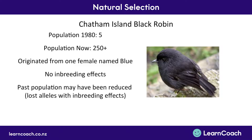There are several theories about why this could be. One is that there are large genetic drift effects, as we learned about in the last video with small populations. But also one could argue that Blue, as the last surviving female robin on Chatham Island, must have great genes really suited to that environment — better than any other bird — and therefore her genes were selected for through natural selection.